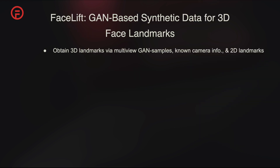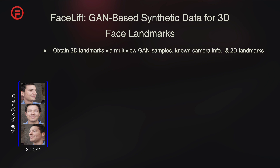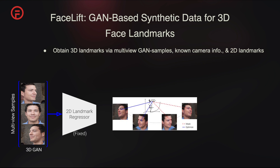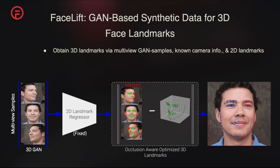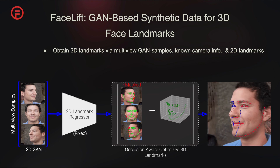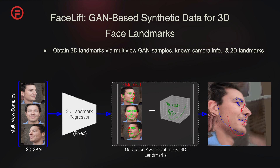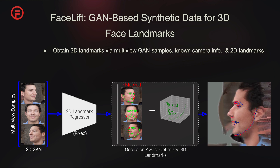We propose a pipeline that uses a 3D-aware GAN to generate synthetic data for training a 3D landmark detector. This involves sampling multi-view images from the GAN, predicting 2D landmarks with a state-of-the-art detector, defining a set of visibility masks for each view in a fixed set of multi-view virtual cameras, and then optimizing a single set of 3D landmarks with visibility masks to account for self-occlusions. As a result, we obtain 3D landmarks for a given GAN latent and can render novel poses and their landmarks, even for extreme poses that the 2D detector fails on.